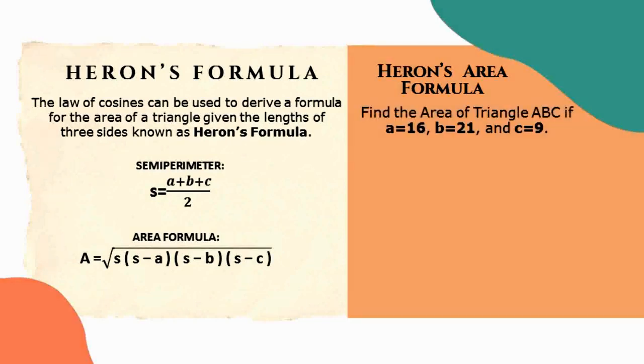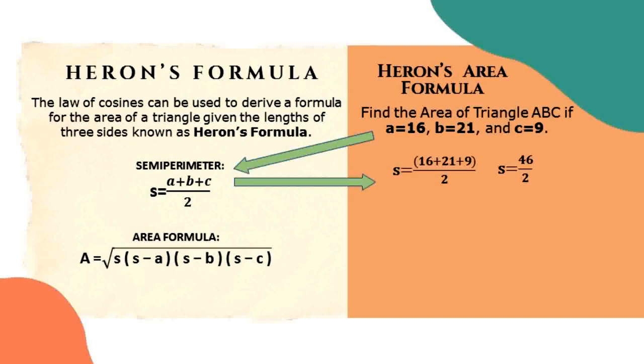Our example, find the area of triangle ABC if a is equal to 16, b is equal to 21, and c is equal to 9. First, we will need to solve the semi-perimeter. Substitute the given to the formula s is equal to 46 over 2. Divide the two numbers. Our semi-perimeter is equal to 23.